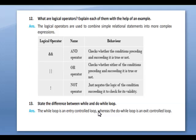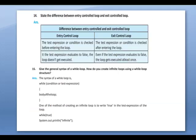State the difference between while and do-while loop. The while loop is an entry control loop whereas the do-while loop is an exit control loop. State the difference between entry control loop and exit control loop — the answer is there.